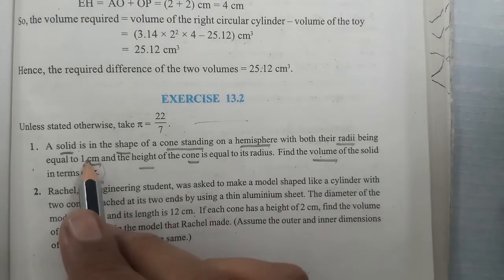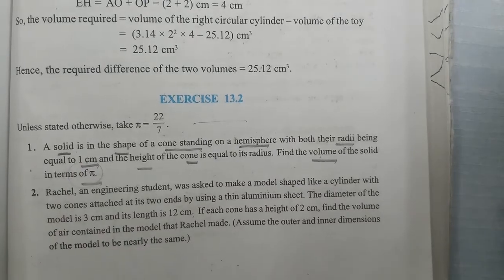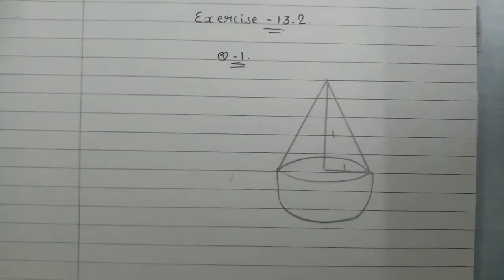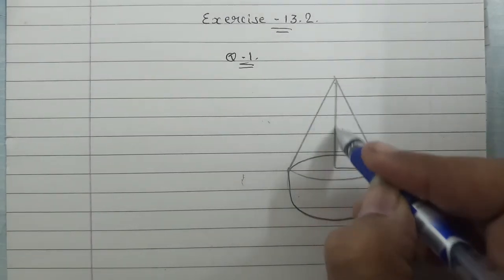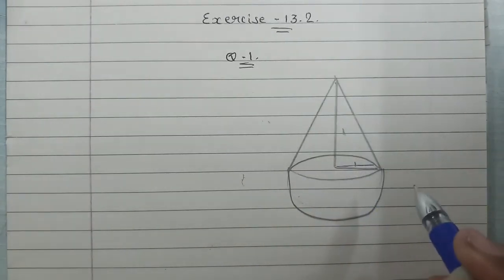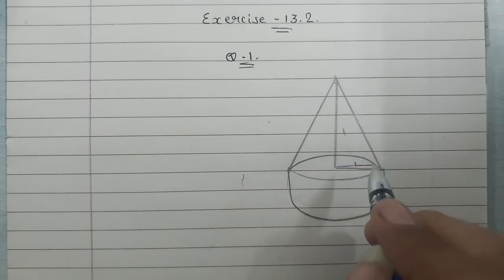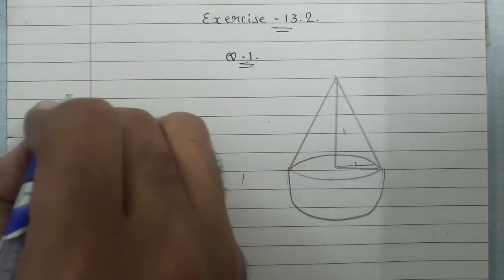So let's find out. As per the question, the figure will look like this. The cone has height one centimeter and radius one centimeter. We need to find its volume in terms of pi.